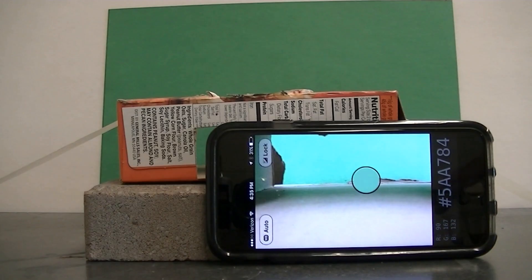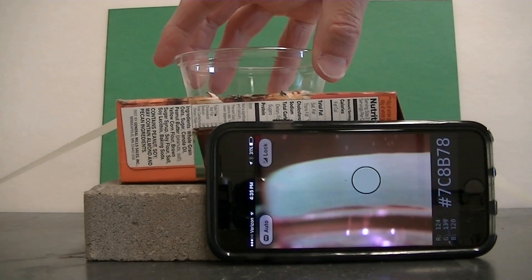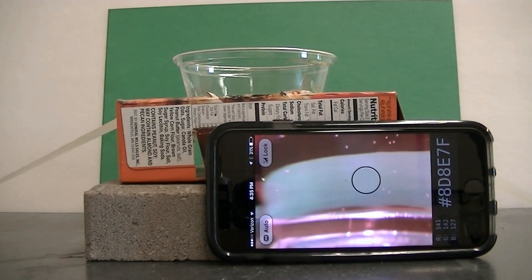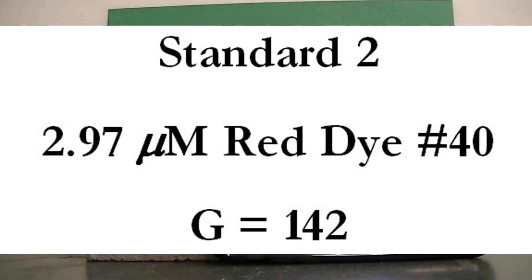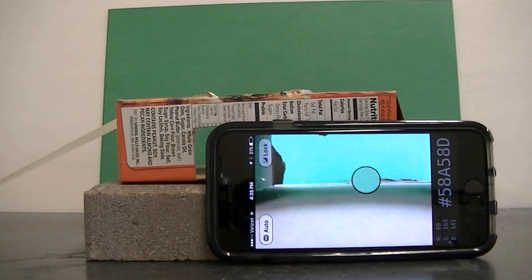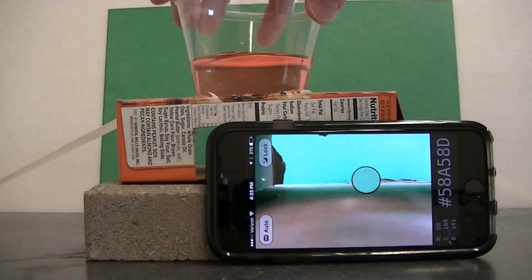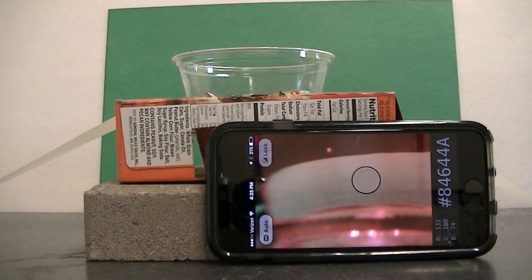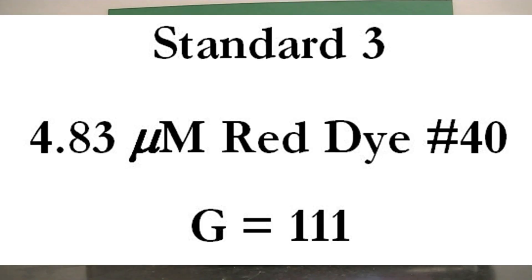My next sample has a concentration of 2.97 micromolar and the corresponding green value looks like 142. So it looks like a little more of the green light gets absorbed which again we'd expect. Now we're going to move up to 4.83 micromolar. And my green value has dropped to 111.